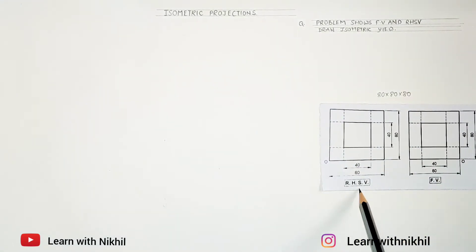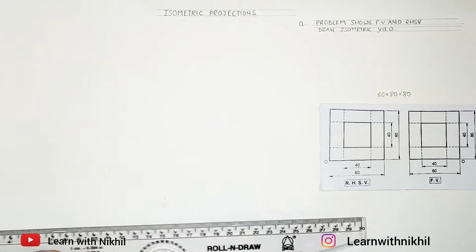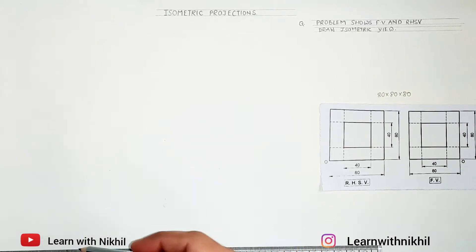From this view we'll draw the three-dimensional isometric view. As you can see, the dimensions—it's a cube of 80 by 80 by 80.